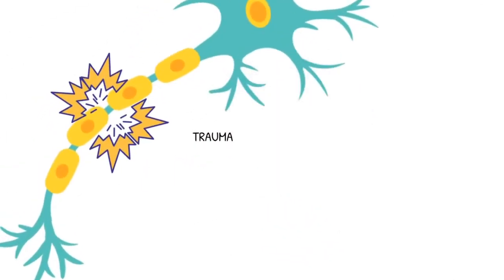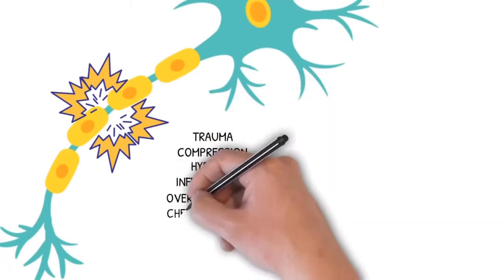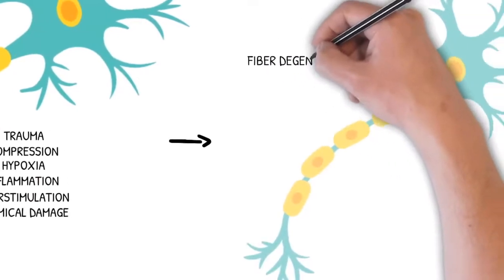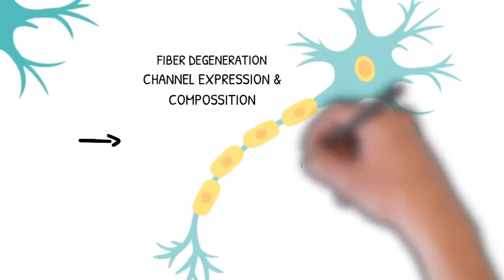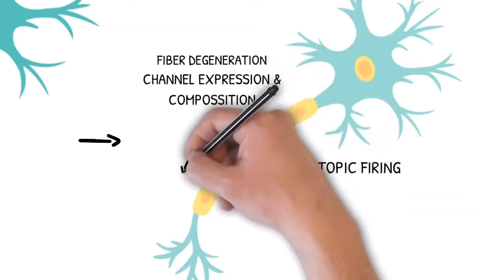Along the axon, injuries such as trauma, compression, hypoxia, inflammation, overstimulation, and chemical damage can induce fiber degeneration and alterations in channel expression and composition, in turn resulting in ectopic firing and faulty signal transmission.